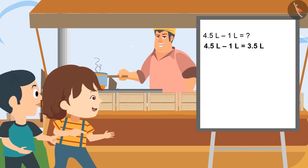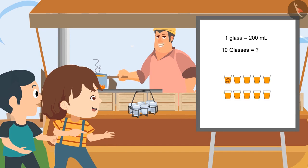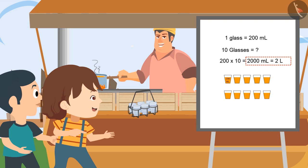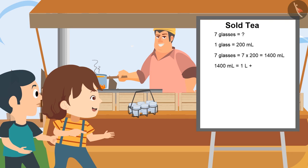Could you please bring the cup of tea? Here is the cup of tea. If each cup carries 200 millilitres of tea and I have made 10 cups of tea, how much millilitres of tea have I prepared? 2,000 millilitres — that is, 200 multiplied by 10 equals 2 litres. I have sold 7 cups; if one cup contains 200 ml, then 7 cups contain 7 multiplied by 200, that is 1,400 ml of tea — meaning 1 litre and 400 millilitres of tea is sold.